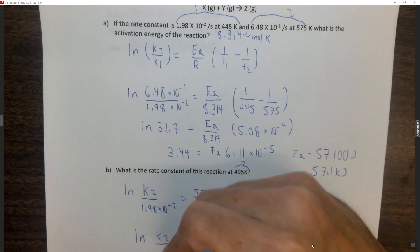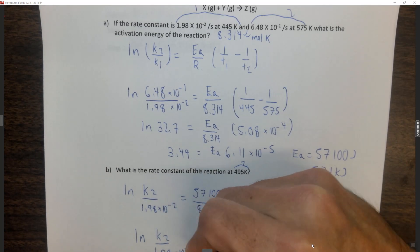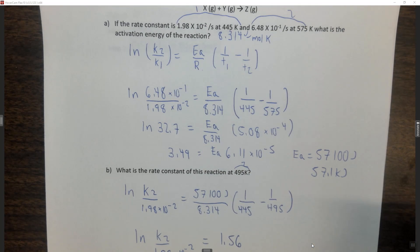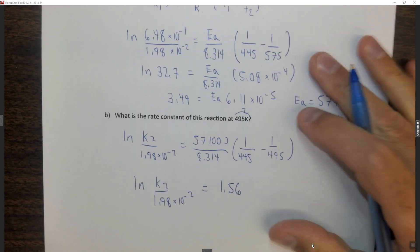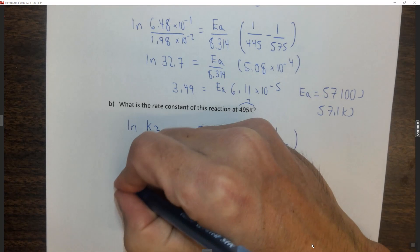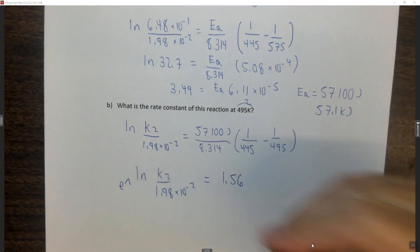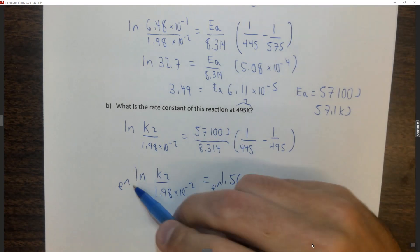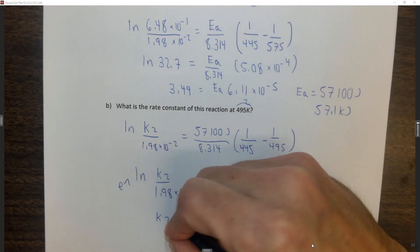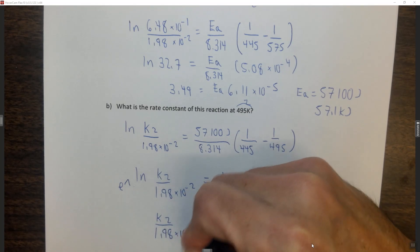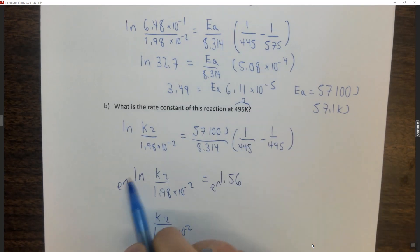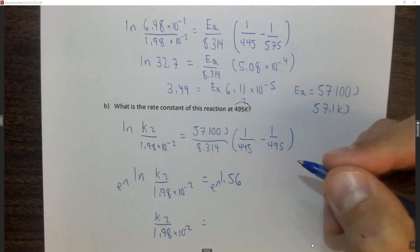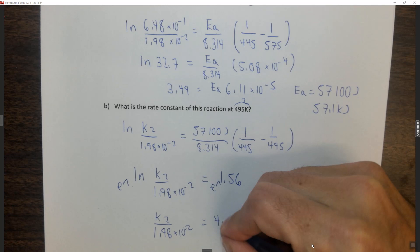So ln of k2 over 1.98 times 10 to the minus 2 is equal to 1.56. Now we need to get rid of the ln. To get rid of the ln, we take the shift ln, or we take e to the ln, that kills the ln, but we have to do it to both sides. So e to the ln is just going to be k2 over 1.98 times 10 to the minus 2. And then e to the 1.56, shift ln on your calculator or second ln depending on which kind of calculator you have, comes out to be 4.75.